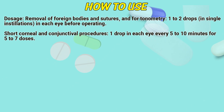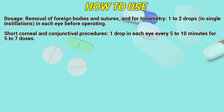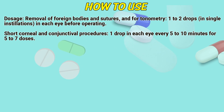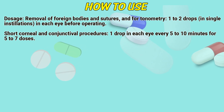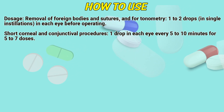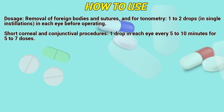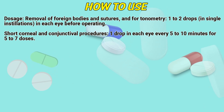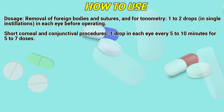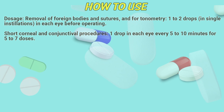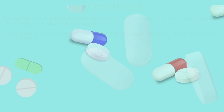How to use: For dosage, removal of foreign bodies and sutures, and for tonometry, 1 to 2 drops in single installations in each eye before operating. For short corneal and conjunctival procedures, 1 drop in each eye every 5 to 10 minutes for 5 to 7 doses.